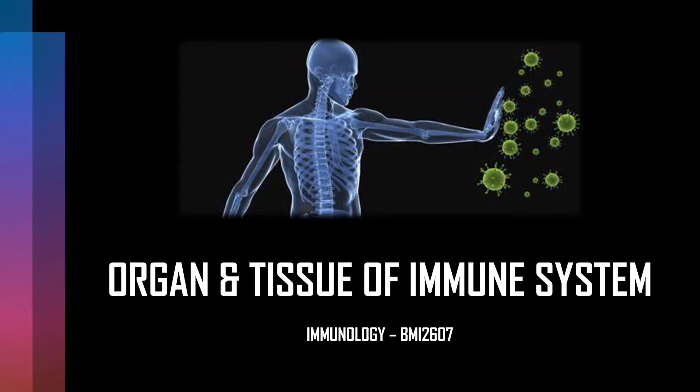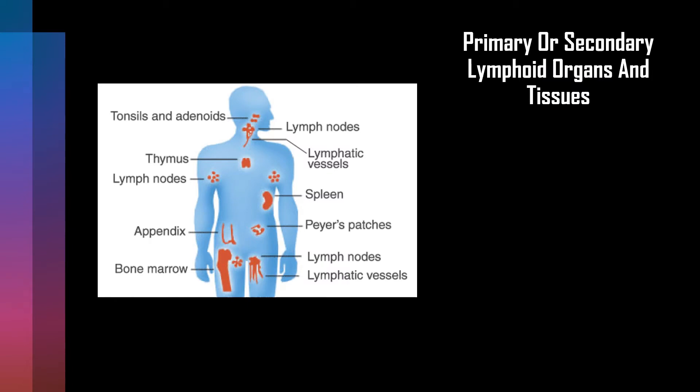In today's lesson we are going to discuss organs and tissues of the immune system from Immunology BMI 2607. Based on their functions, the organs and tissues of the immune system can be divided into primary or secondary lymphoid organs and tissues.